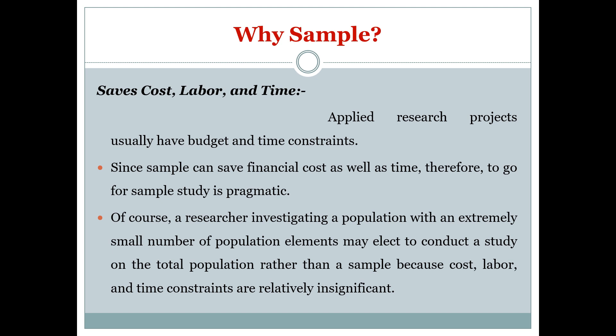A researcher investigating a population with an extremely small number of elements may elect to conduct a study on the total population. For example, if we want to investigate the effects of physical therapy in a very rare condition like arthrogryphosis multiplex congenita, we may need to go for the complete population rather than a sample, because cost, labour, and time constraints are relatively insignificant. If we have only 2, 5, or 10 cases of a condition, we can select all of them.